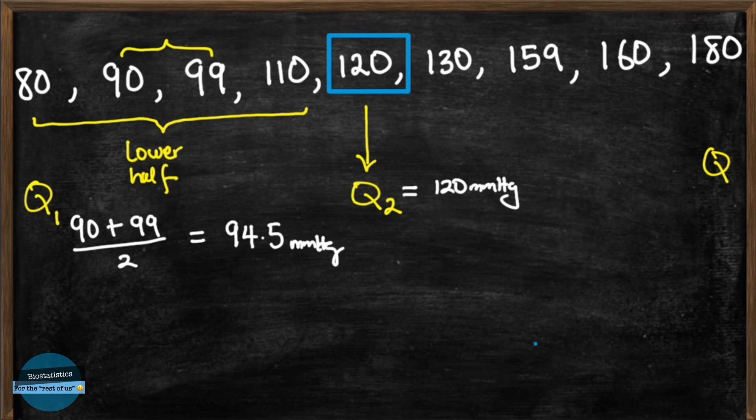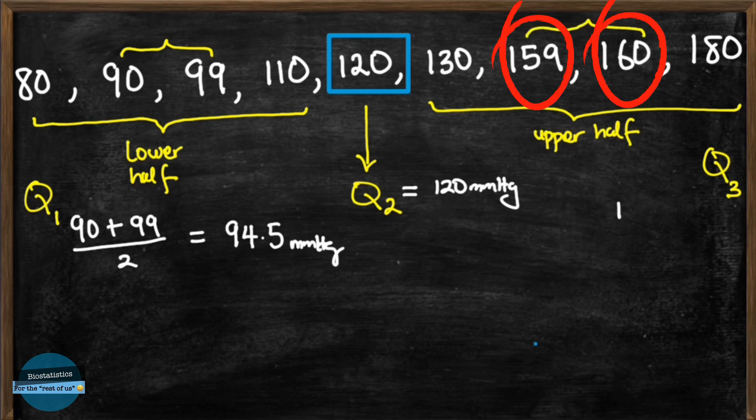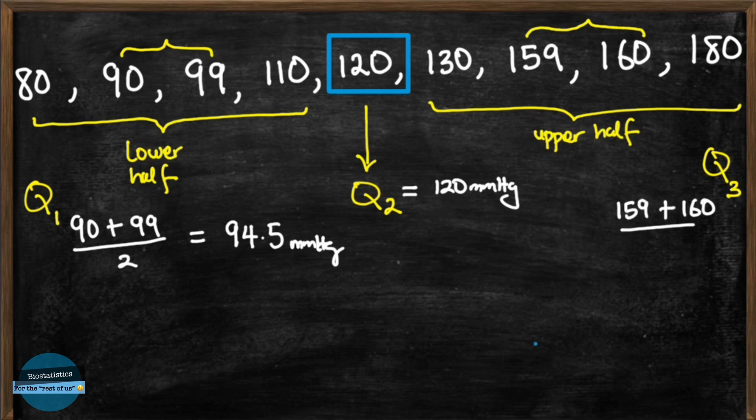And lastly, let's go ahead and find the third quartile, Q3. The third quartile is the median of the upper half of the data. We need to find the average of the middle two numbers in the upper half and the upper half consists of four values: 130, 159, 160 and 180. So the middle two numbers are 159 and 160. The average of 159 and 160 is going to be 159 plus 160 divided by 2. That would be equal to 159.5. So our Q3 is 159.5 millimeters of mercury.